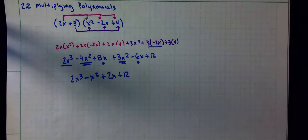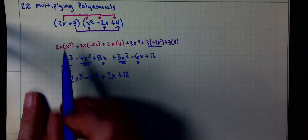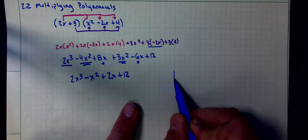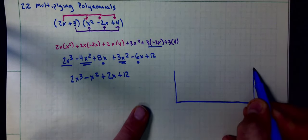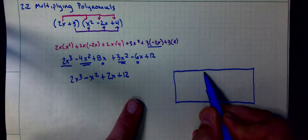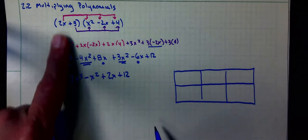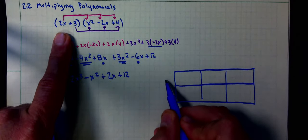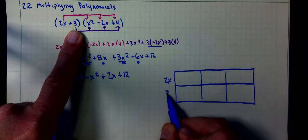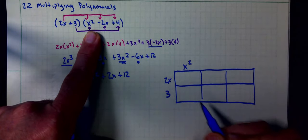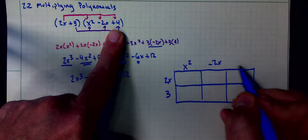The next method I'm going to use is called the box method. What I'm going to do is I have 2 terms by 3 terms, so I'm going to make a rectangle. On the side I'm going to write 2x and 3. On top I'm going to write x squared, minus 2x, plus 4.